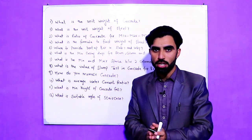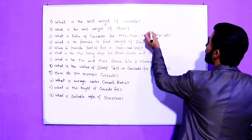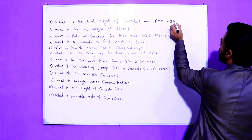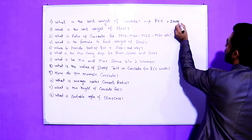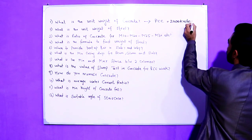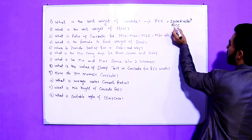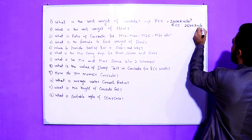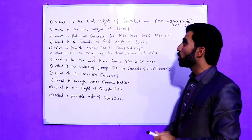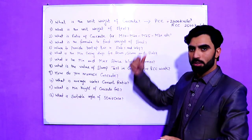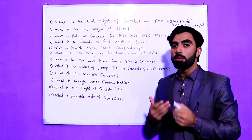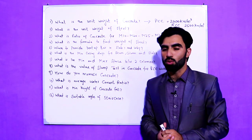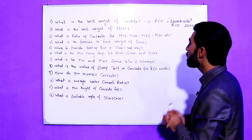The first question is: what is the unit weight of concrete? In concrete we have PCC and RCC. The answer is: PCC is 2400 kilonewton per meter cube and RCC is 2500 kilonewton per meter cube.